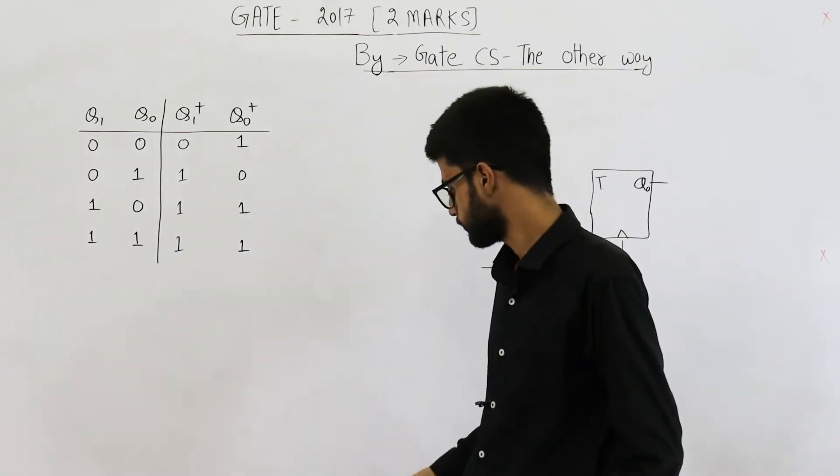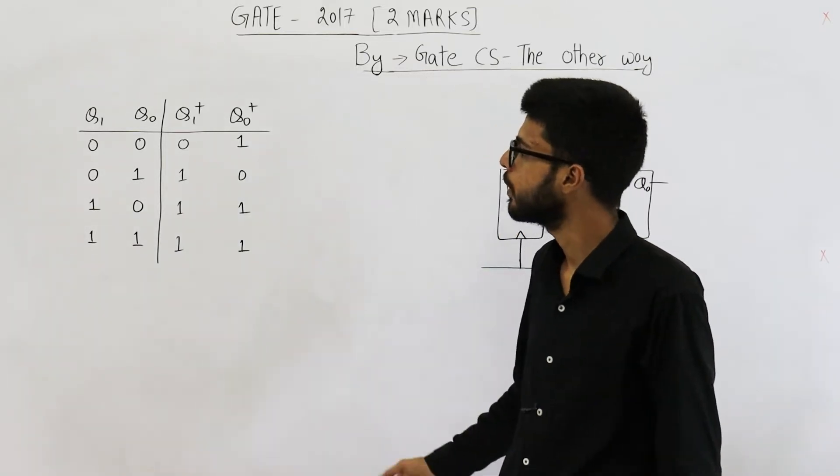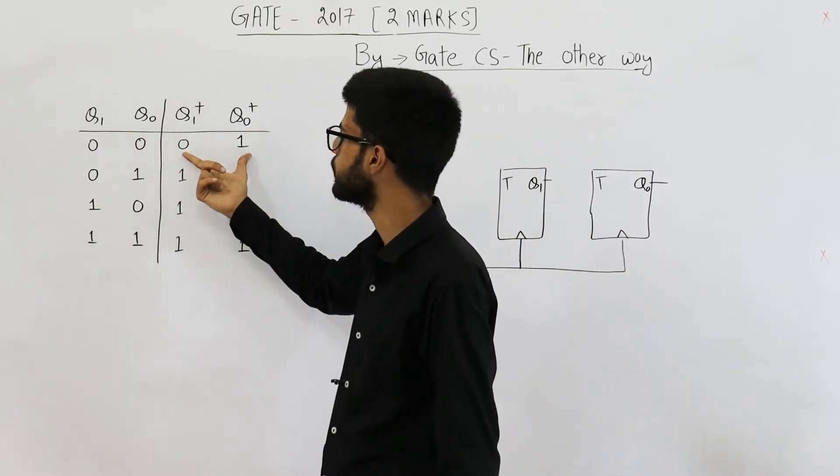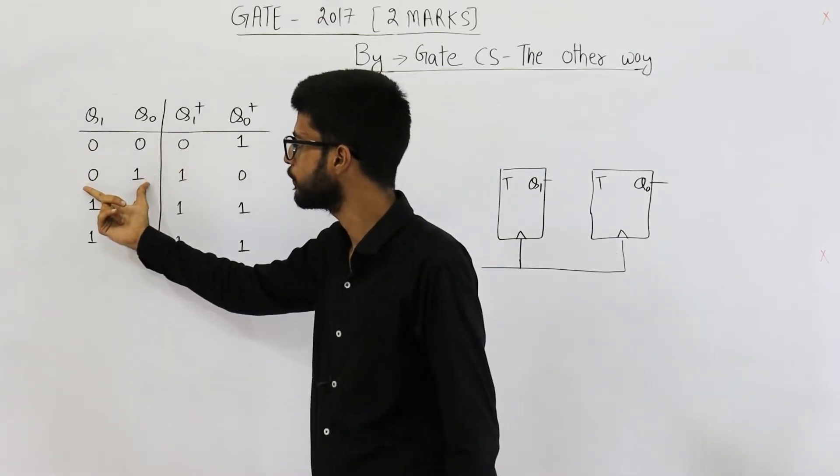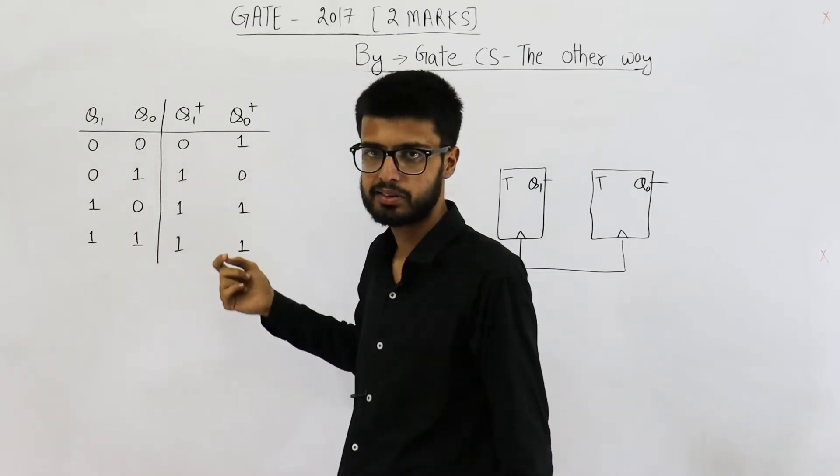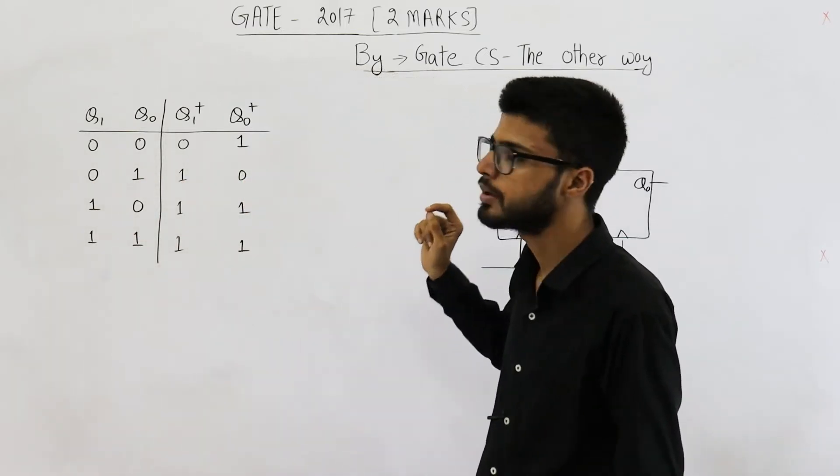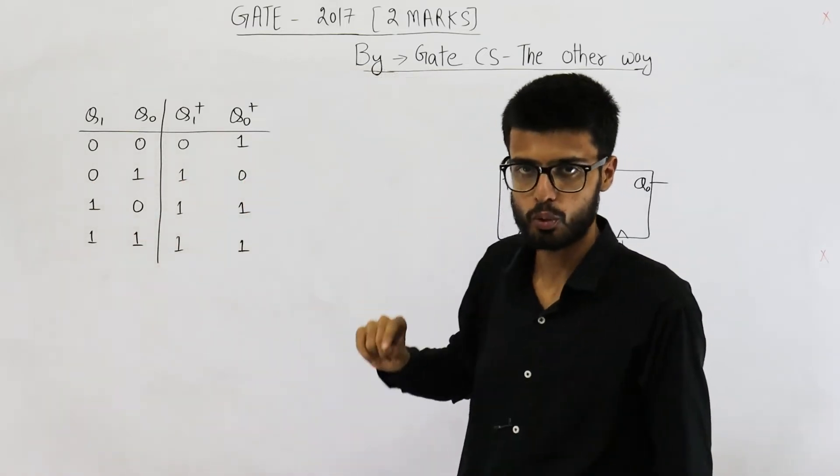They are saying, if currently you are in state 0,0, next state must be 0,1. Similarly, if you are in state 0,1, then next state must be 2. This is a saturating up counter of 2 bits.